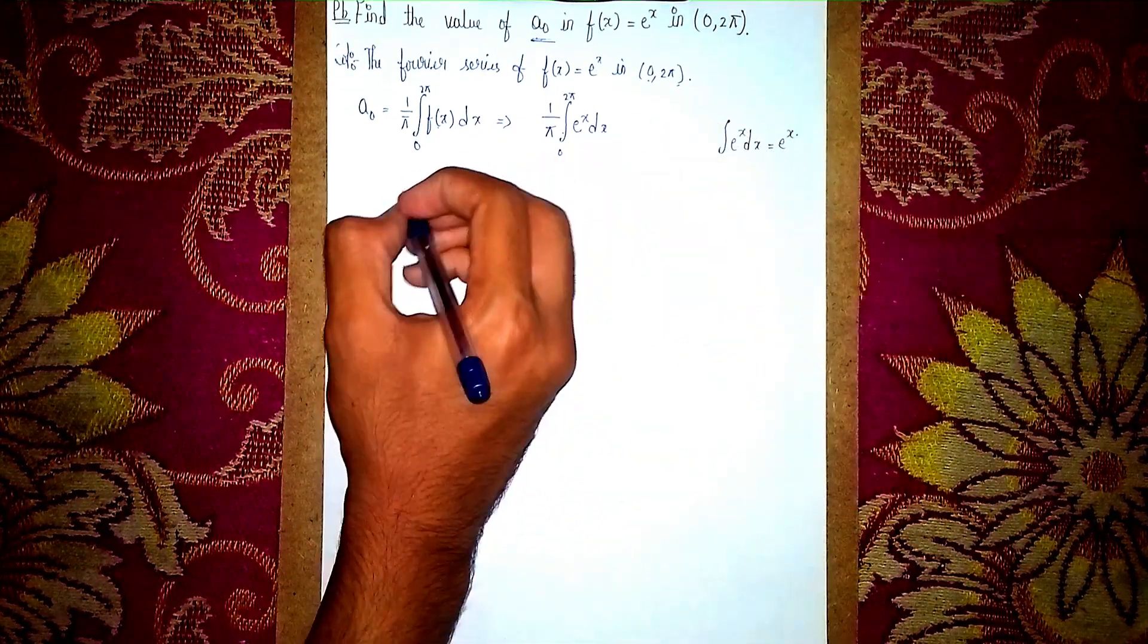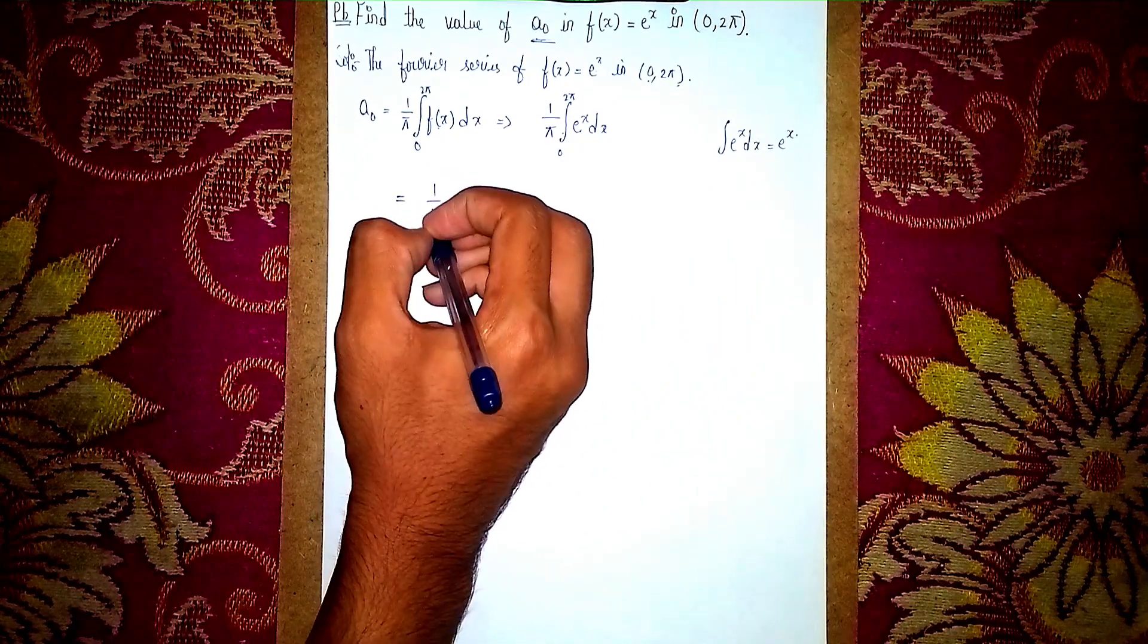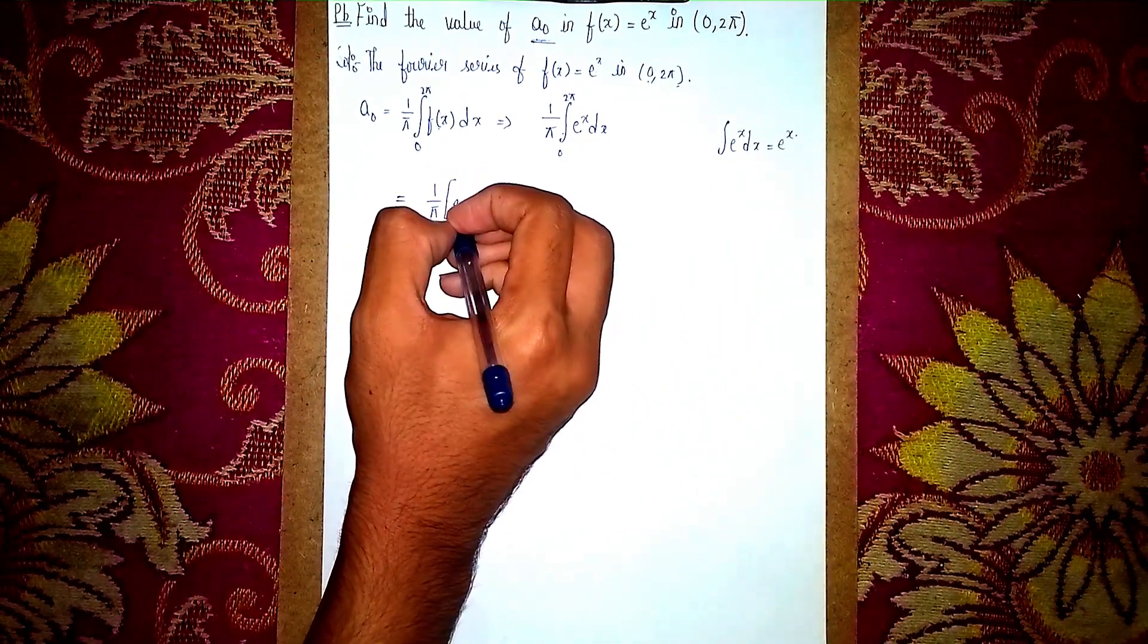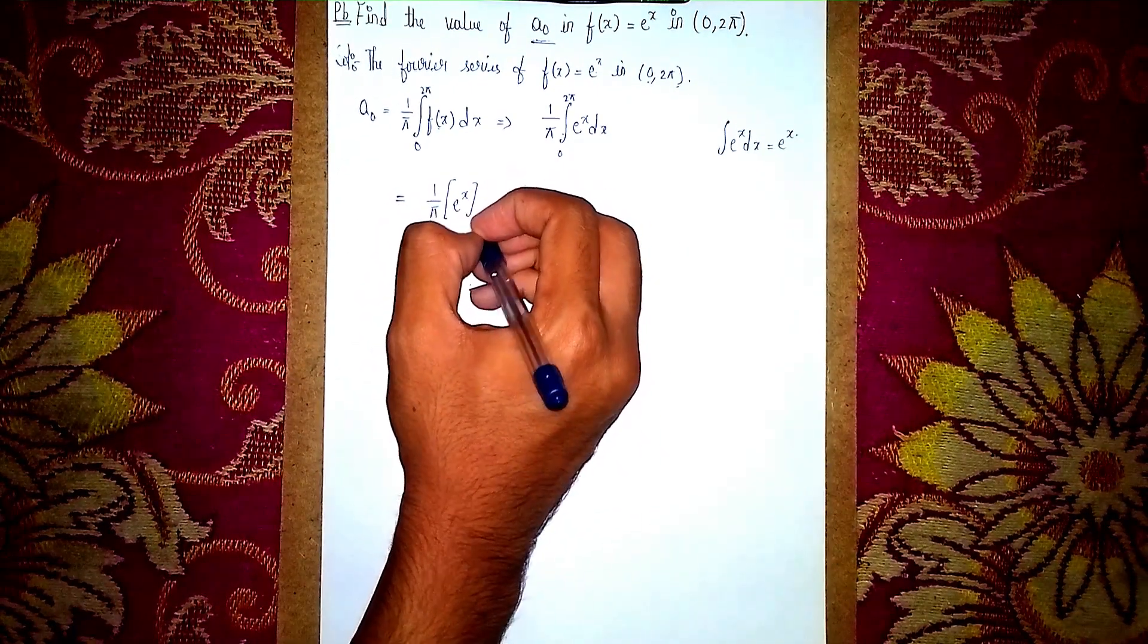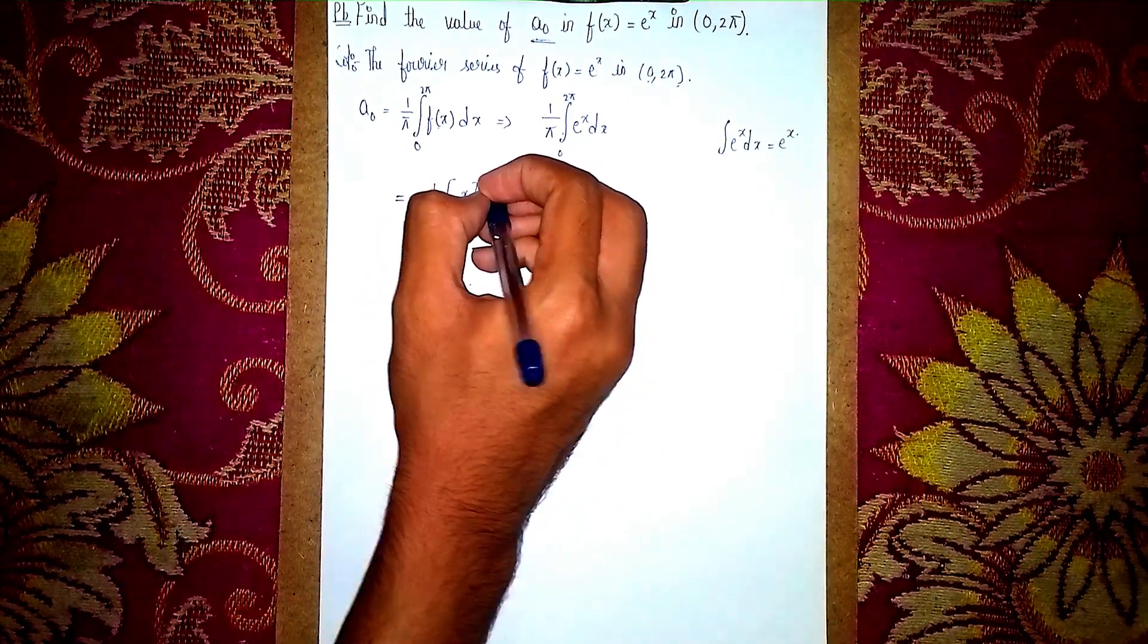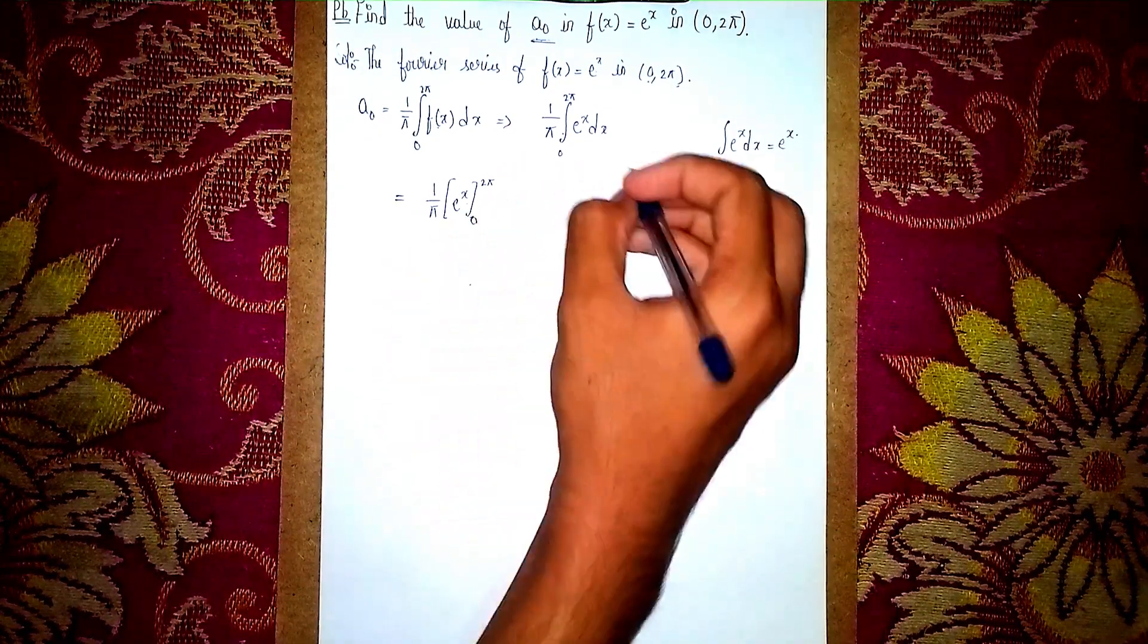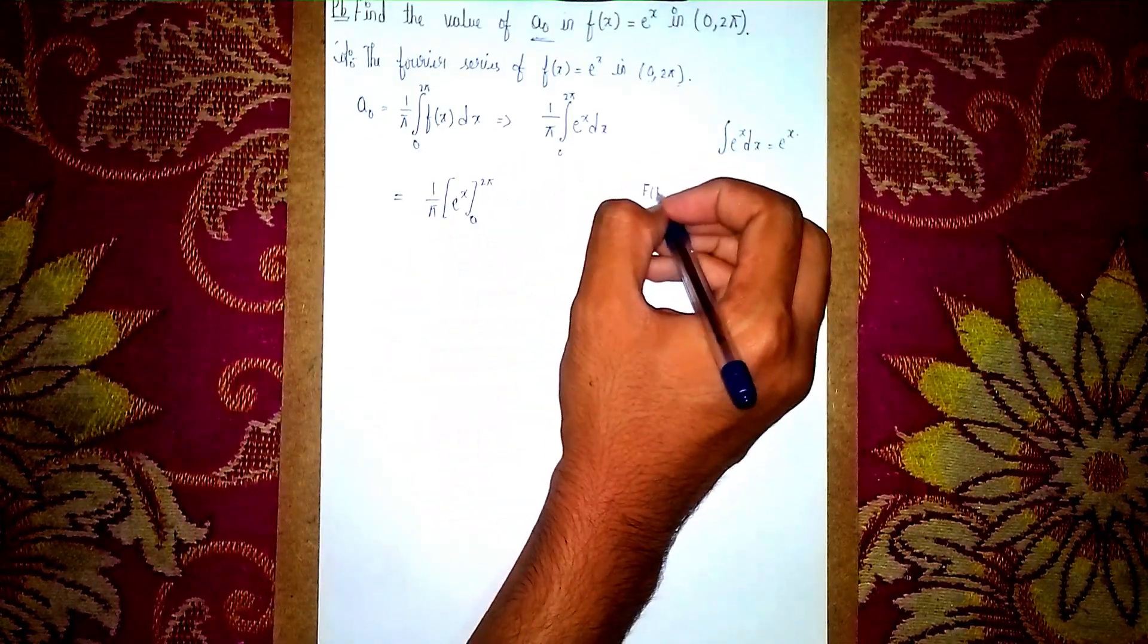So it becomes (1/π)[e^x]₀^(2π). Now let's apply the limits. How do we apply limits? f(b) - f(a). This is the step to apply limits.